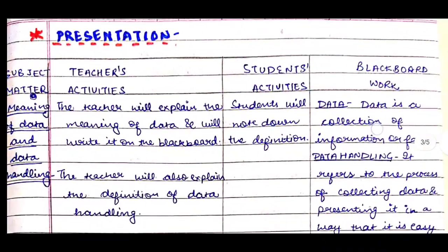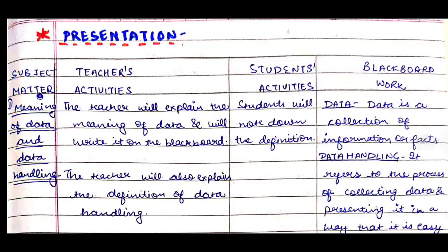The next heading is presentation. In presentation, we make four columns: subject matter, teacher's activities, student's activities, and blackboard work. You can add one more column for teaching method, but I have not made it. For the blackboard work column, if you are making a file for DLT, PEAD, or any other teaching course, you can paste a black chart paper there and write on it with a white pen so that it looks realistic.